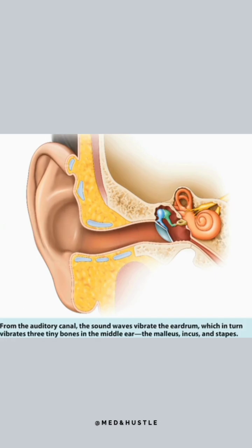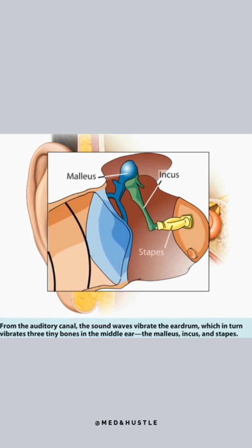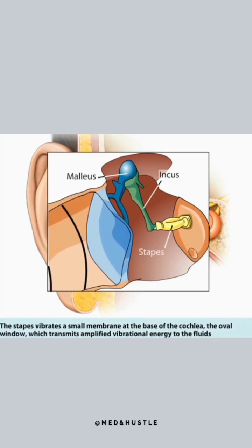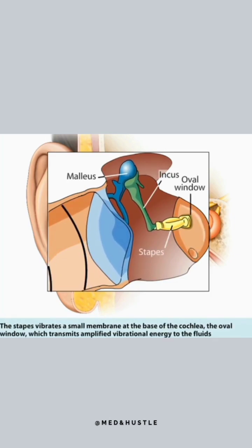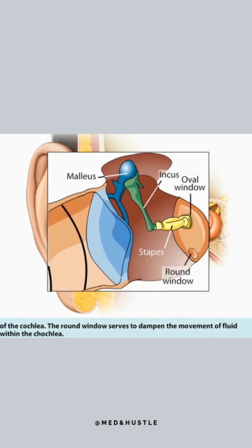From the auditory canal, the sound waves vibrate the eardrum, which in turn vibrates three tiny bones in the middle ear: the malleus, incus, and stapes. The stapes vibrates a small membrane at the base of the cochlea, the oval window, which transmits amplified vibrational energy to the fluids of the cochlea. The round window serves to dampen the movement of fluid within the cochlea.